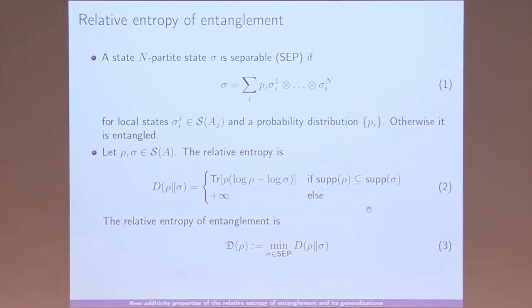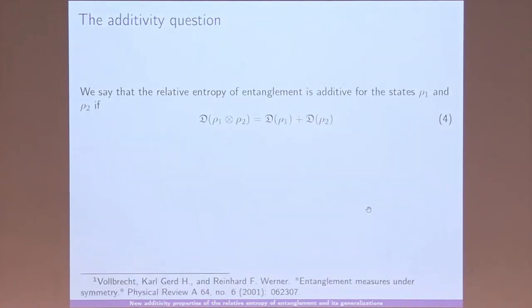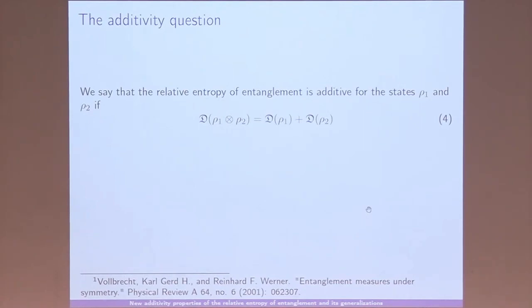This is what we want for an entanglement measure, because the physical intuition is that with LOCC we cannot increase entanglement, and the measure should reflect this behavior. The main topic of this talk is the additivity question. Additivity means that under tensor product — if I have state ρ₁ and state ρ₂ — the relative entropy of entanglement is additive if D(ρ₁ ⊗ ρ₂) equals D(ρ₁) plus D(ρ₂). This is a desirable property, since the two states are uncorrelated.